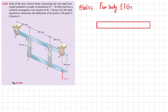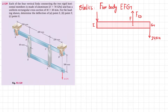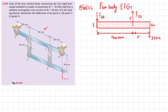Let me draw it here. This is point E, this is point F, and this is point G. At point G we have a load of 24 kilonewtons. At point F, a force F_CD will be acting, and at point E we will have force F_BE. The downward distance from E to F is 400 millimeters, and from F to G is 250 millimeters.